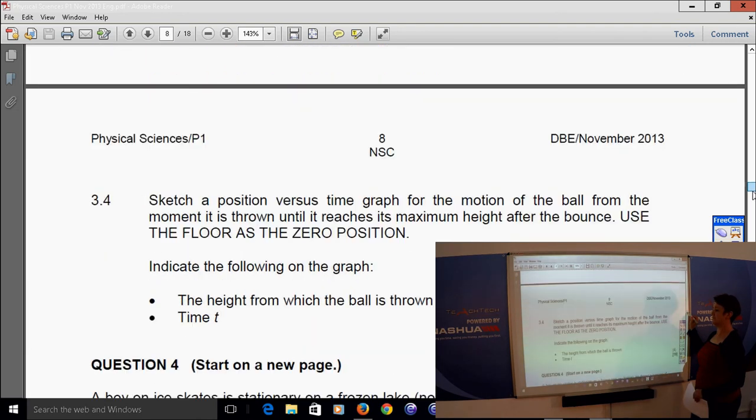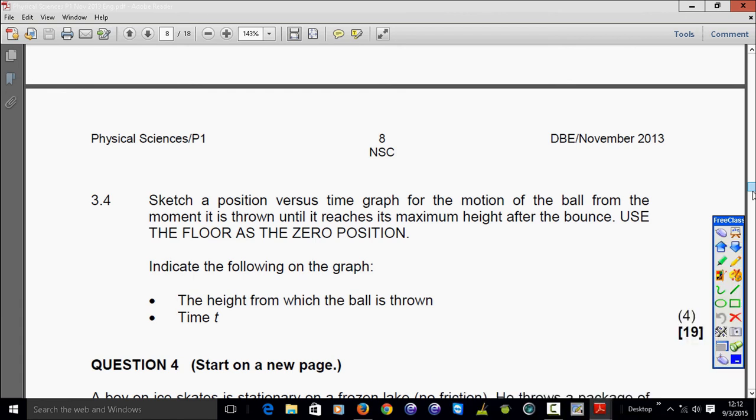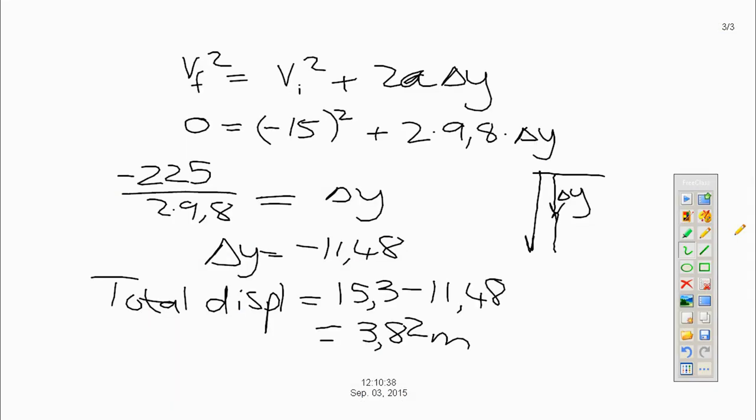And then we have to sketch a position versus time graph for the motion of the ball from the moment it is thrown until it reaches the maximum height after the bounce and use the floor as the zero position. And we have to indicate the height from which the ball is thrown and the time. Now, because downward is positive, so let's just look. Position time graph.